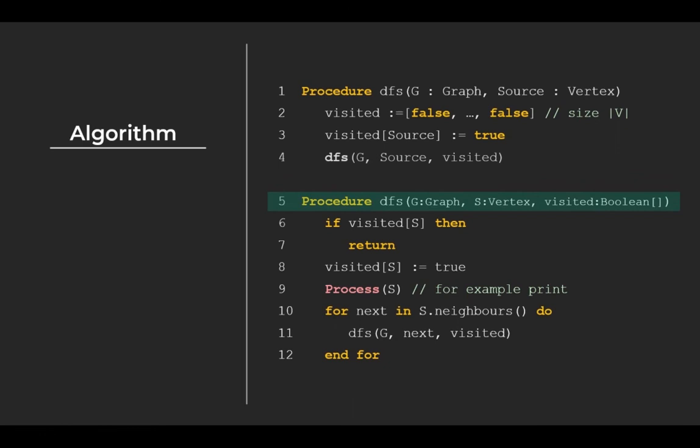The second procedure takes three inputs, the graph to traverse, the vertex S that needs to be explored, and the array recording the visited node. First, we check if the node S has already been visited. If that is the case, it is a dead end and we backtrack. The backtracking is handled by the recursion call, so we don't have to do anything. As I said before, a neatly written recursion is elegant.